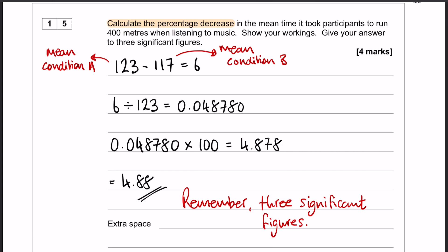Okay, we're then going to divide 6 by 123. Okay, because we need to know what percentage 6 of 123 is, and that gives us 0.048780.